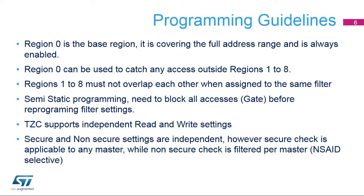TZC programming should observe the following guidelines. Region 0 is the base region covering the full address range and is always enabled. Region 0 can be used to catch any access outside Regions 1 to 8. Regions 1 to 8 must not overlap each other when assigned to the same filter. In case of reconfiguration by semi-static programming, all accesses or gates must be blocked before reprogramming filter settings. TZC access filtering is based on independent read and write settings.